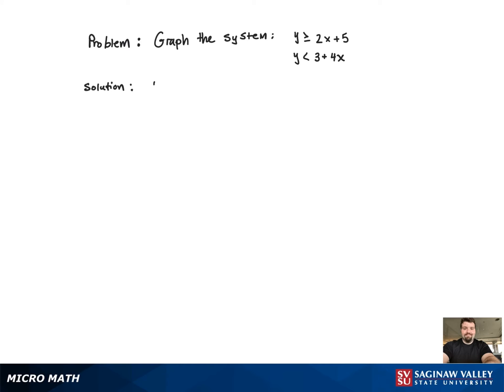Typically when dealing with inequalities, you want to replace the inequality symbol with an equal sign and graph the line first. So I need two points. I know that since it's in slope-intercept form that the y-intercept is (0, 5).